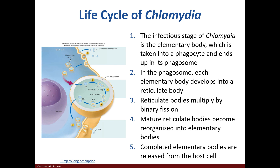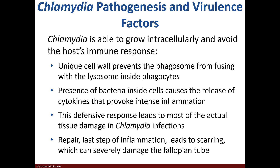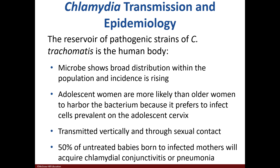The infectious stage of chlamydia is the elementary body, which is phagocytized. Normally a microbe would be destroyed, but this microbe remains in the phagosome and develops into a reticulate body. Those reticulate bodies replicate and then reorganize into elementary bodies, which are released. The ability of chlamydia to grow intracellularly enables it to evade the immune system. The presence of the pathogen causes the release of cytokines, which induces inflammation. The pathogen is harbored in humans and the mode of transfer is vertically or via sexual contact.